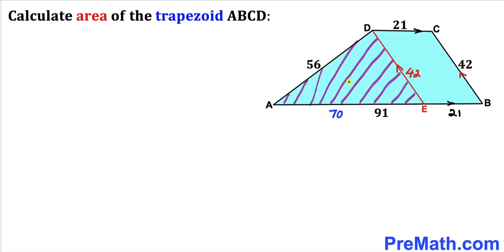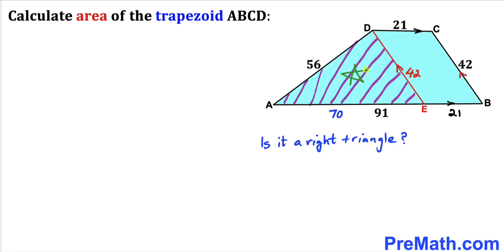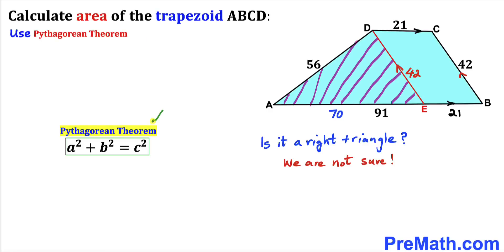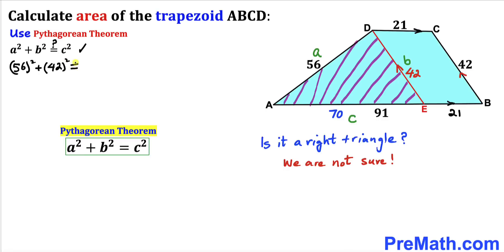Let's focus on triangle AED whose side lengths are 70, 42, and 56. Our question is: is it a right triangle? Let's apply the Pythagorean theorem to find out. The Pythagorean theorem states A squared plus B squared equals C squared. We call the longest side C, which is 70. So we have 56 squared plus 42 squared equal to 70 squared.